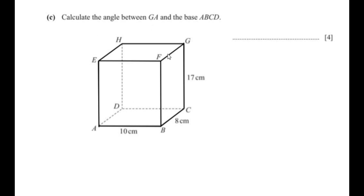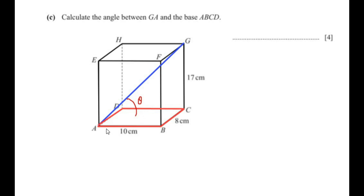Calculate the angle between GA and the base ABCD. GA represents the diagonal of the cuboid and it makes an angle with the base ABCD. Let us call this angle theta. We need to find what angle is made by line GA with the base ABCD. Since ABCD is a rectangle, each vertex is 90 degrees.